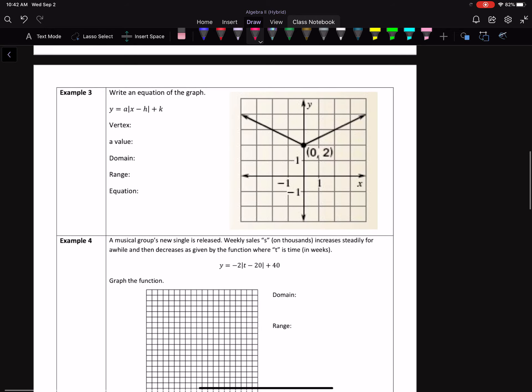Alright, one more example like this. So write the equation of the graph. My vertex is at 0, 2, so there you found h, k. The A value, so pick two points, so your vertex is always 1. Here's another, so I'm going up 1, rising 1, running. So my A value is 1 over 2.